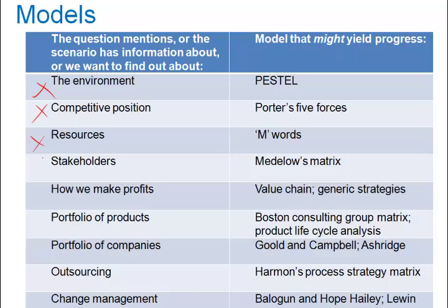Stakeholders can be both internal and external. An example of an internal stakeholder would be a shareholder or an employee. An external stakeholder could be a member of the local community who is perhaps going to be inconvenienced by the company's operations. Some stakeholders bridge the gap — customers and suppliers are contractually related to the company. Remember Mendelow's matrix, telling you the amount of power and the likelihood that people will exercise their power.